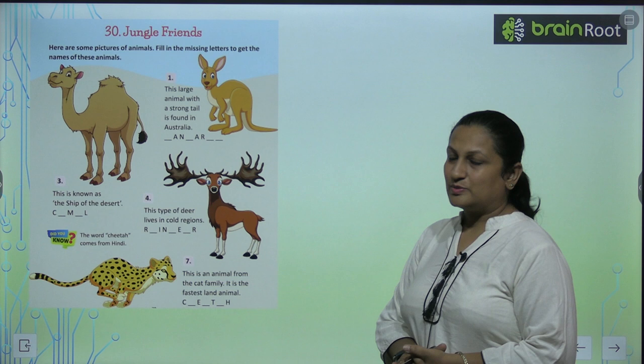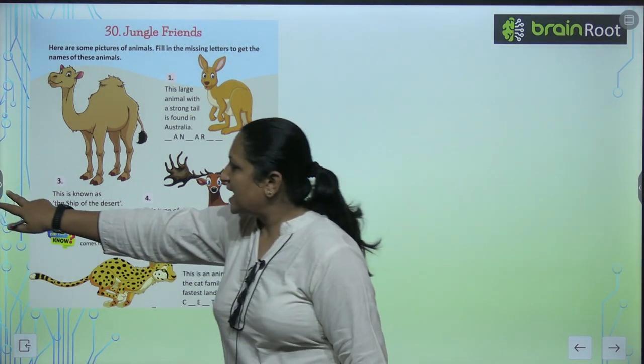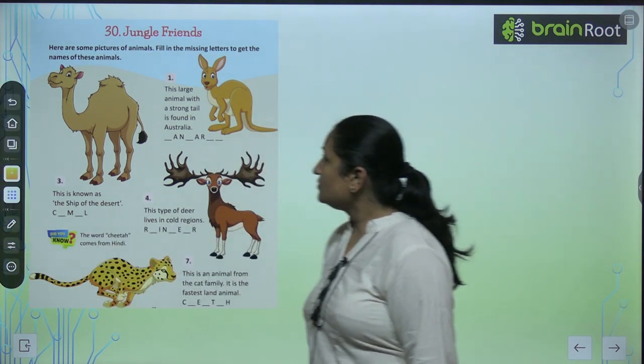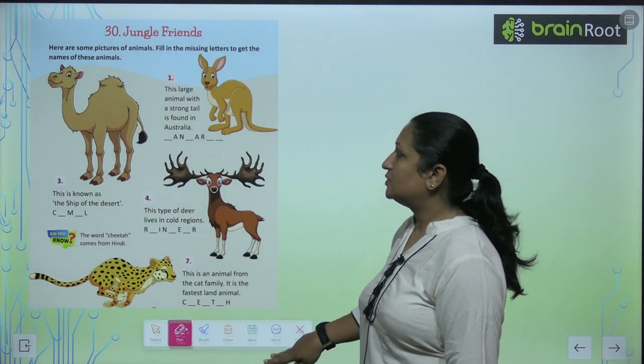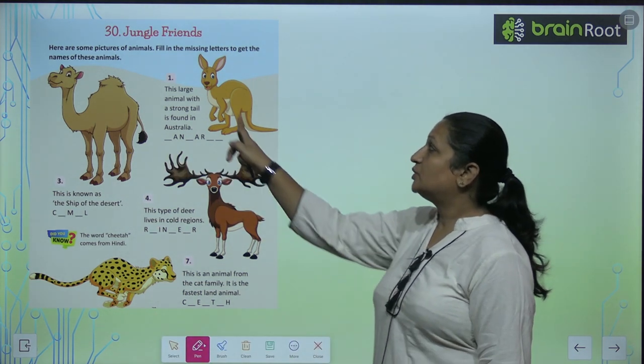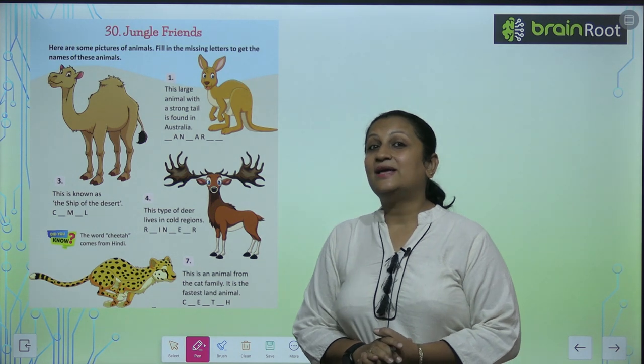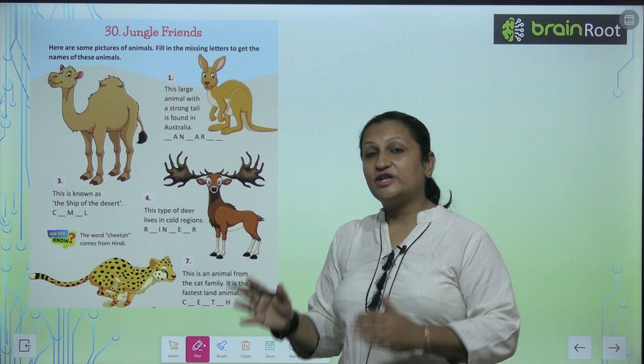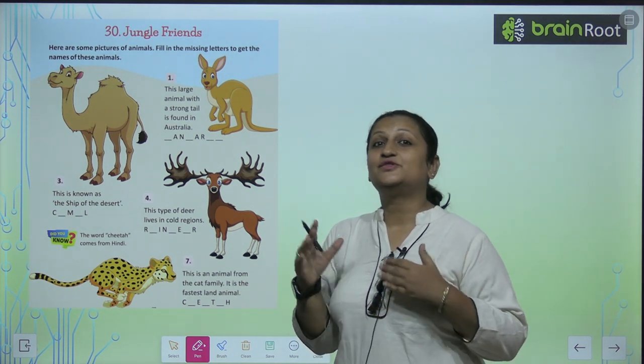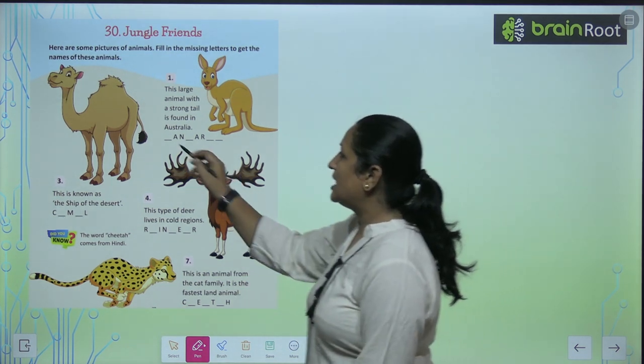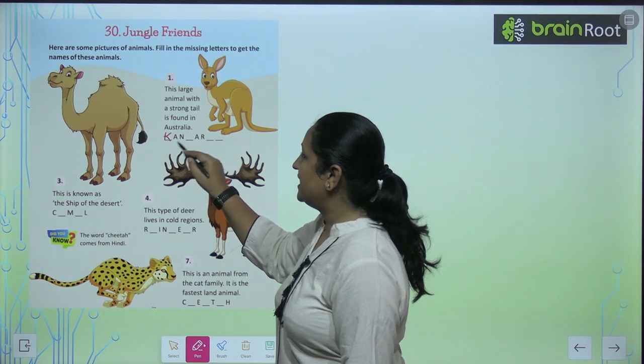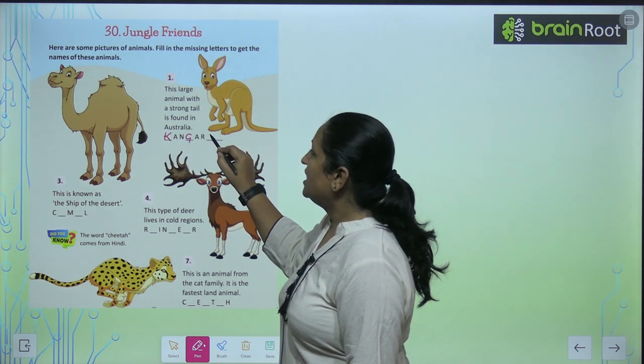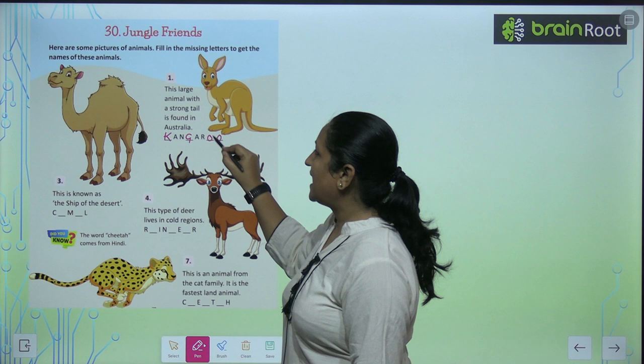See the first one. This large animal with a strong tail is found in Australia. What is this name? This name is kangaroo. Kangaroo is a kind of animal that is native to Australia. So we will write here: kangaroo.